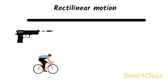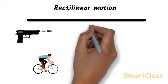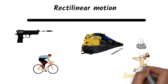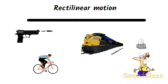The motion of a cyclist running on a straight road is also a rectilinear motion. Motion of a train on a straight track is also a rectilinear motion. The motion of a falling stone is a rectilinear motion. Rectilinear motion takes place in a fixed direction.